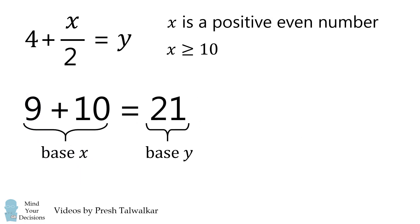So we now consider possible values of x and y. The smallest value of x could be 10, which would mean y is equal to 9. And this is a true equation.